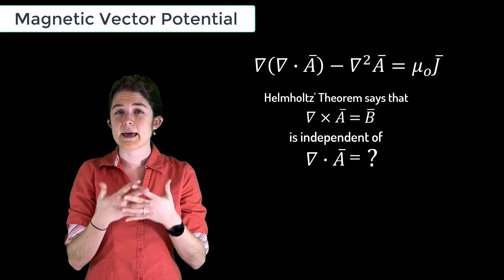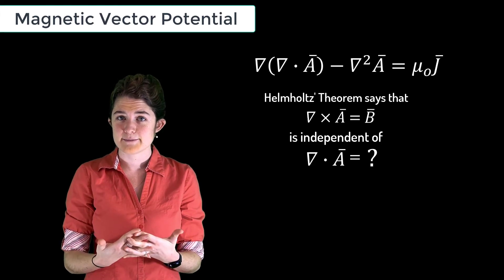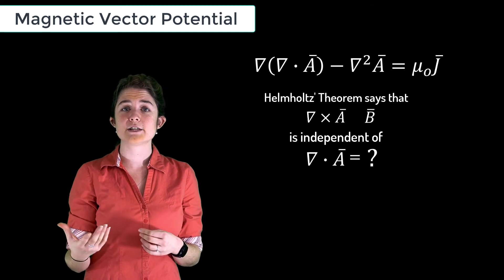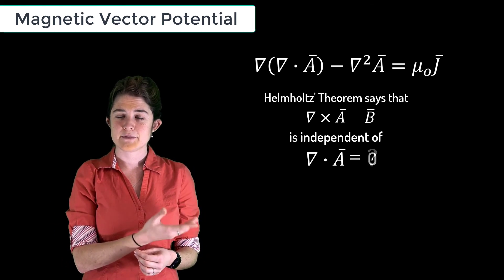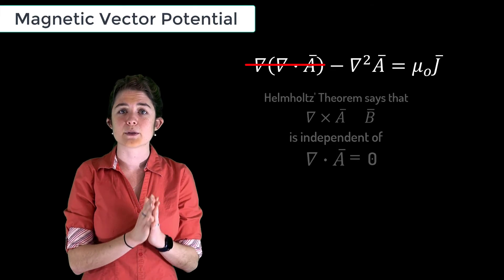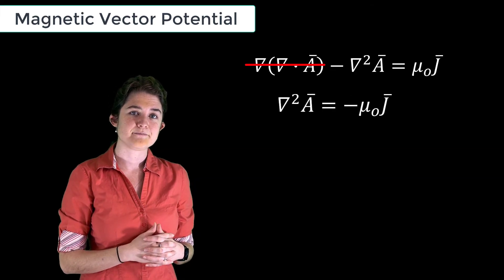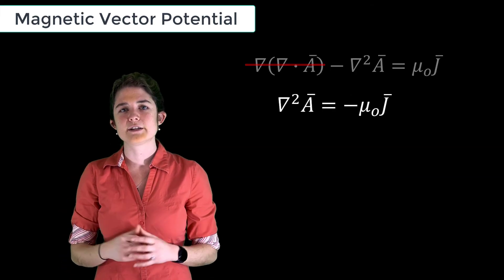In this case, we can choose to let the divergence of A equal zero. That gets rid of this term, leaving us with only this differential equation. The solution to this differential equation is given here.